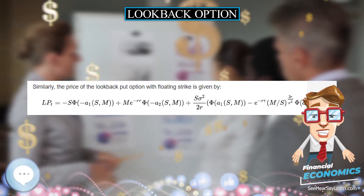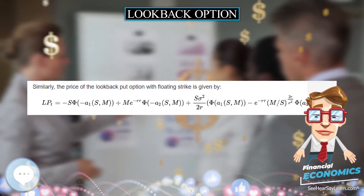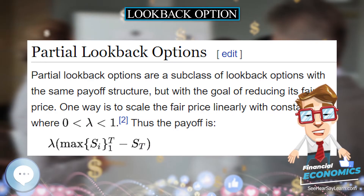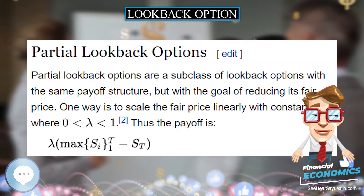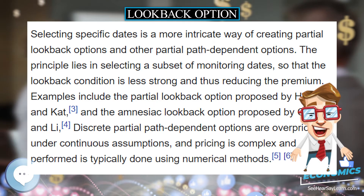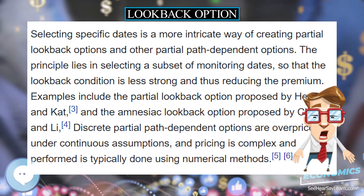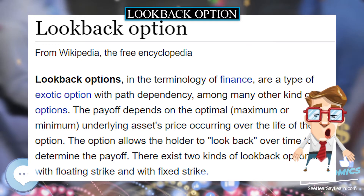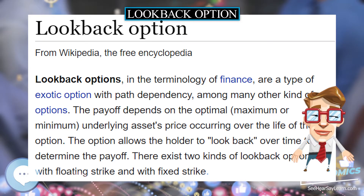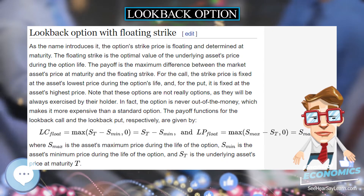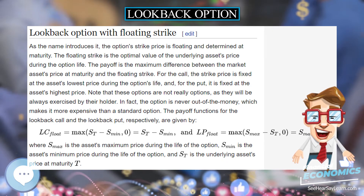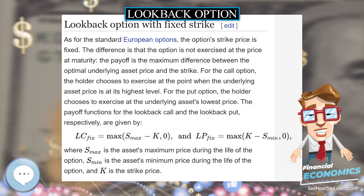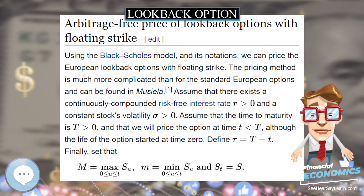For the lookback option with fixed strike, as with standard European options, the option's strike price is fixed. The difference is that the option is not exercised at the price at maturity — the payoff is the maximum difference between the optimal underlying asset price and the strike. For the call option, the holder chooses to exercise at the point when the underlying asset price is at its highest level. For the put option, the holder chooses to exercise at the underlying asset's lowest price.